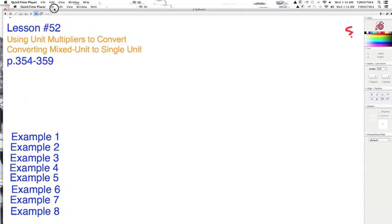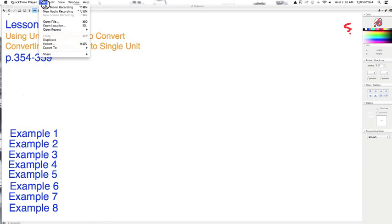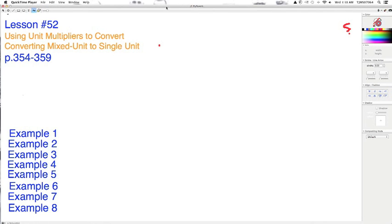Alright, still can't sleep. It's 3:38 in the morning and we get to do lesson 52. This is using unit multipliers to convert measures and converting mixed units to single unit measures. I think this will go pretty fast. I'm jumping right into example one.